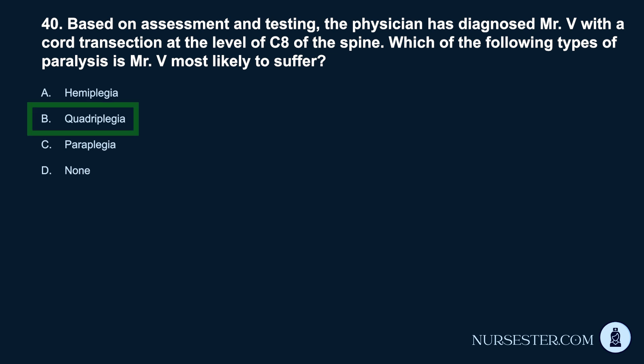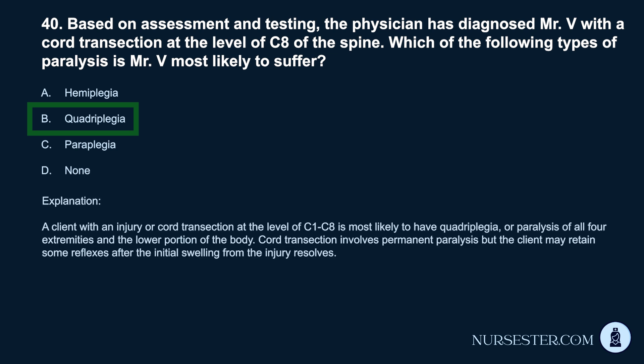Correct answer: B. Quadriplegia. A client with an injury or cord transection at the level of C1 through C8 is most likely to have quadriplegia, or paralysis of all four extremities and the lower portion of the body. Cord transection involves permanent paralysis, but the client may retain some reflexes after the initial swelling from the injury resolves.